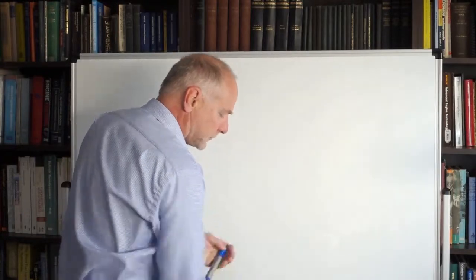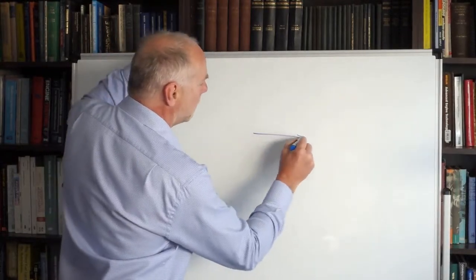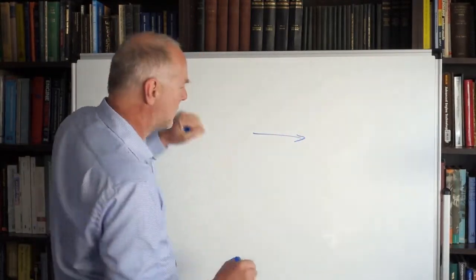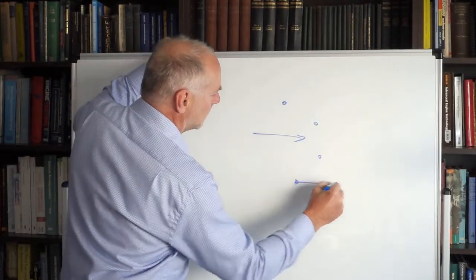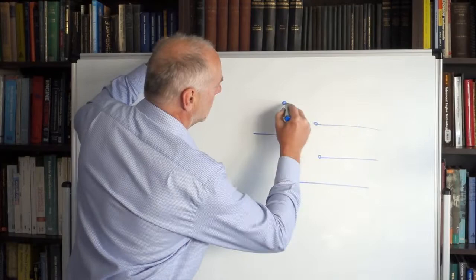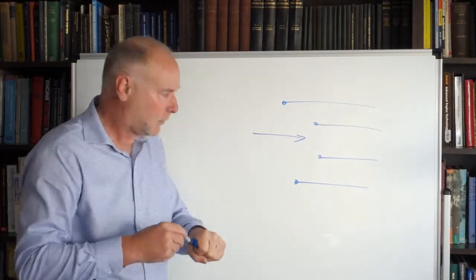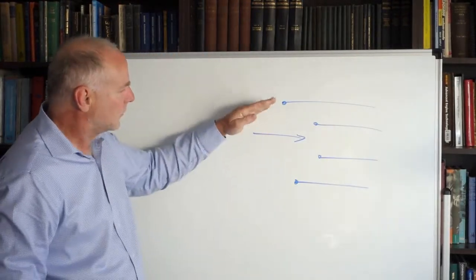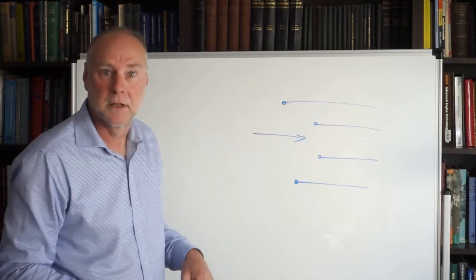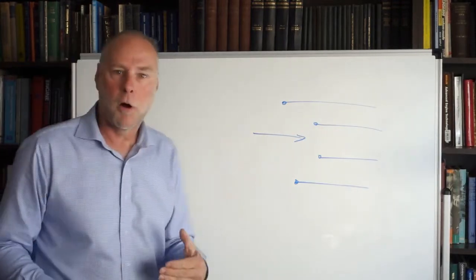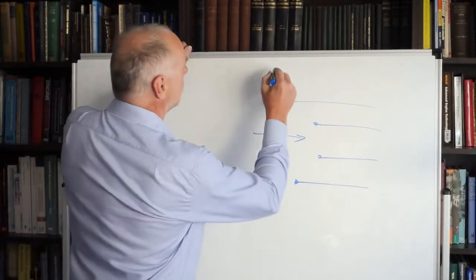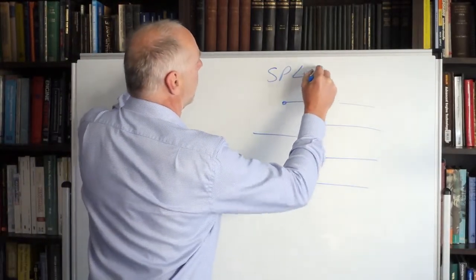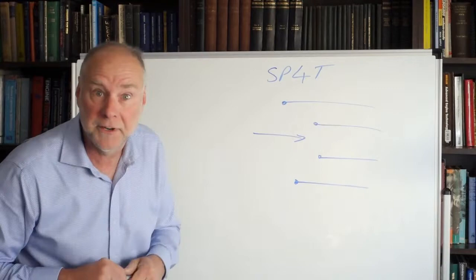What about this one? We have a single pole. We all know what that means now. And then, look. Wow! What we can do is we can switch it to four different positions. Now we could call it a single pole quad throw but we don't do that. We call it a single pole four throw. And it's a rotary switch.